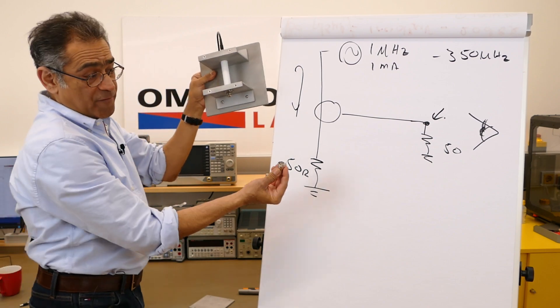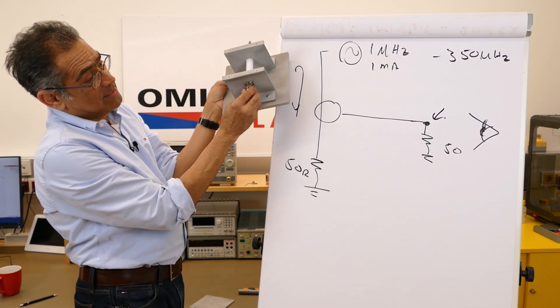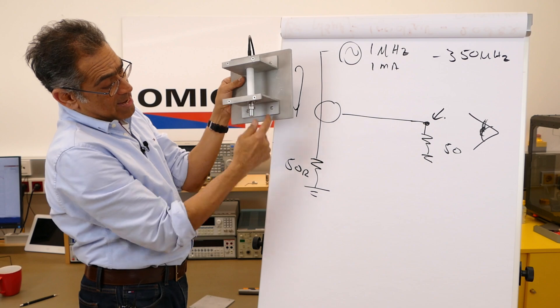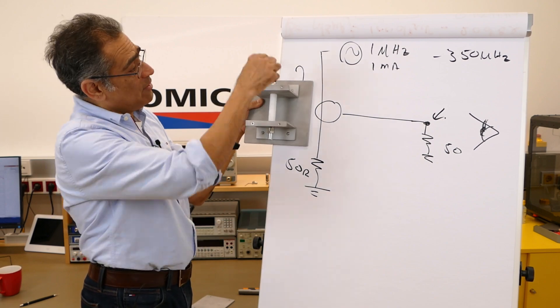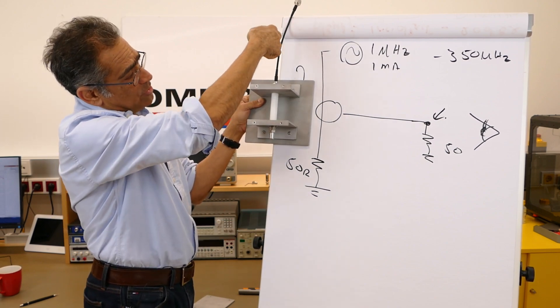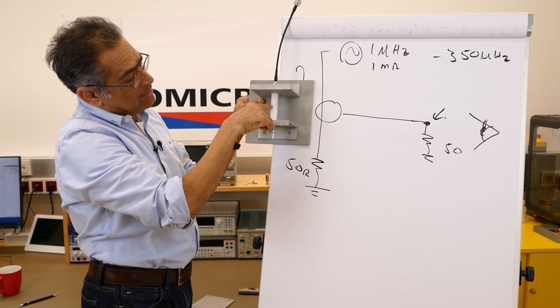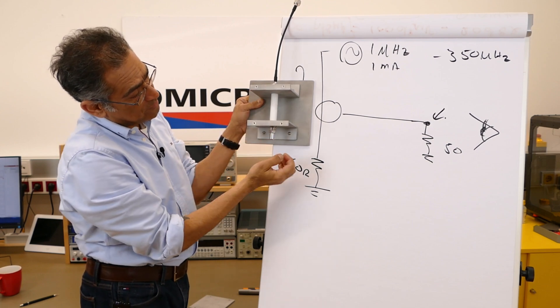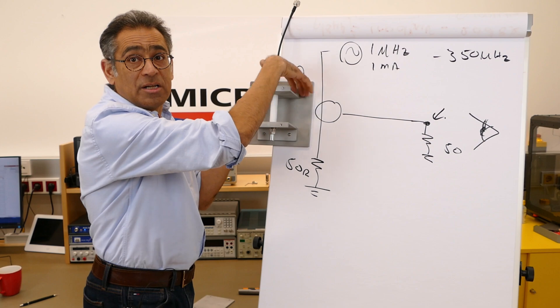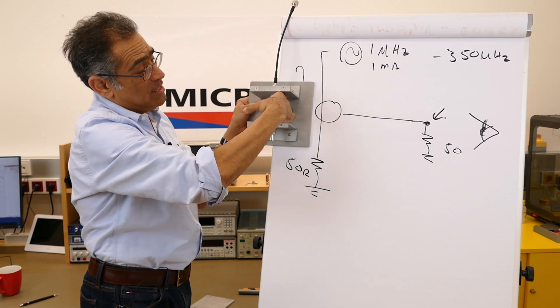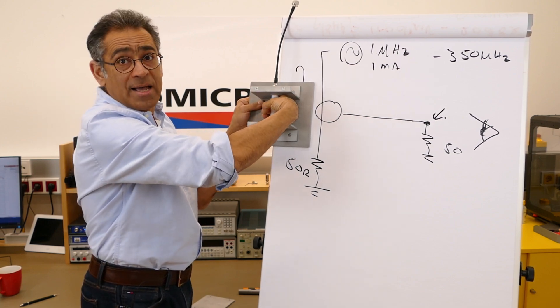And then you have a 50 ohm terminator which sits at the end there, connected to ground. So effectively what is happening is a current is going through here - this is a single cable - goes through the 50 ohm and returns via the metal chassis. And all you have to do then is you clamp your current over here and then you make a measurement.